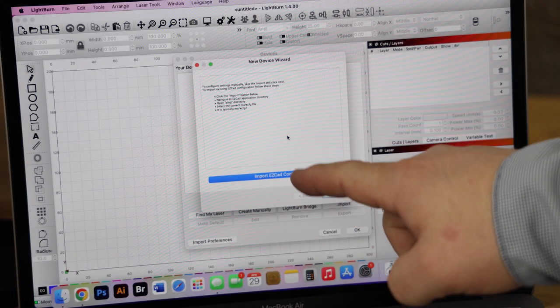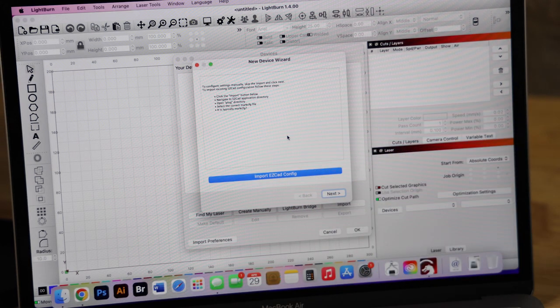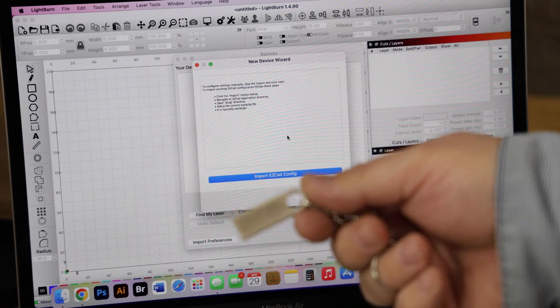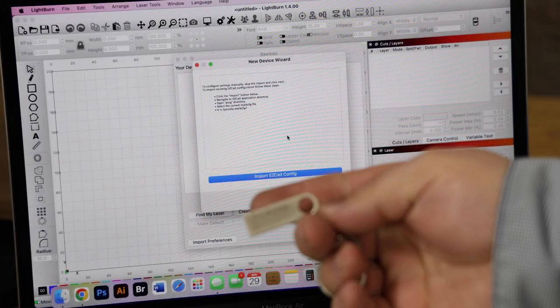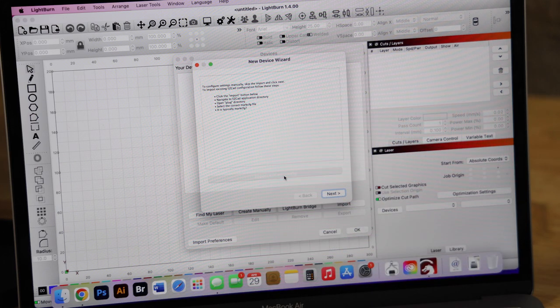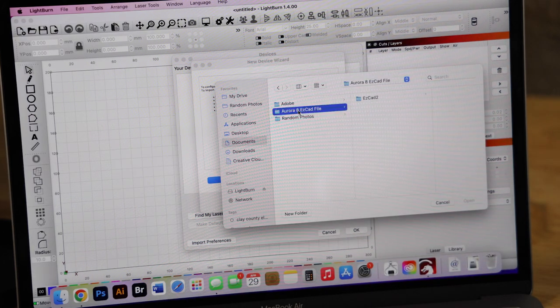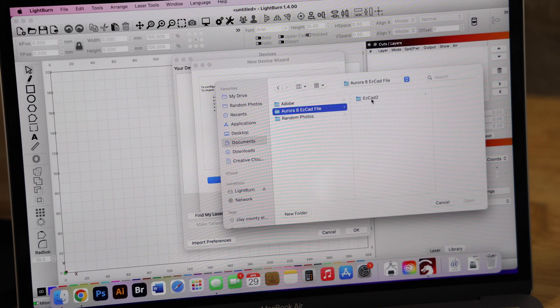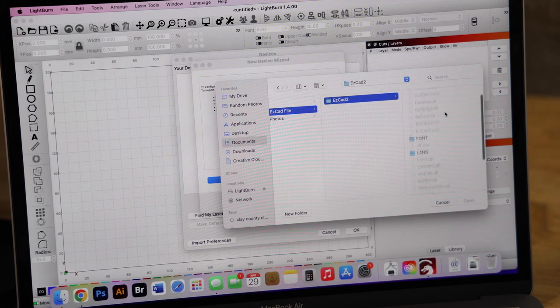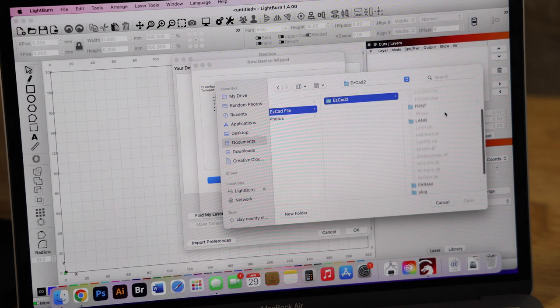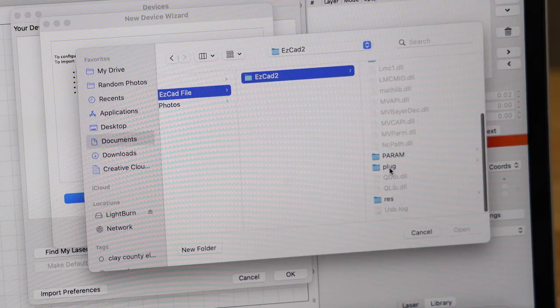At this step, you do have to import an EzCAD file. You can get that file actually off of the Thunder flash drive that came with your machine. I've already copied it to my computer, so I should be able to find it here. So I have this already saved here off of the flash drive. It's under EzCAD 2, and then we want to scroll down here. We want to find the folder that says plug.